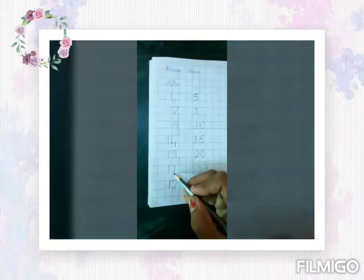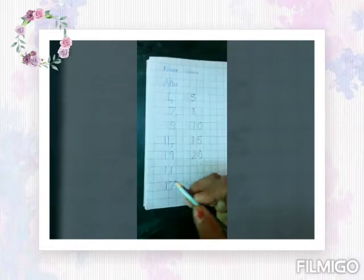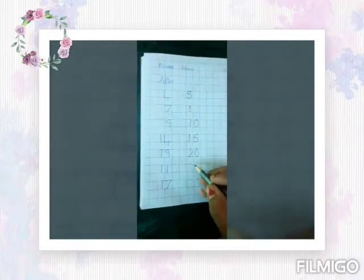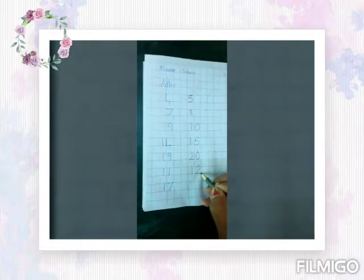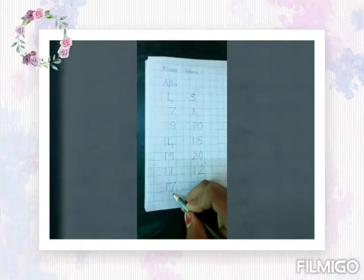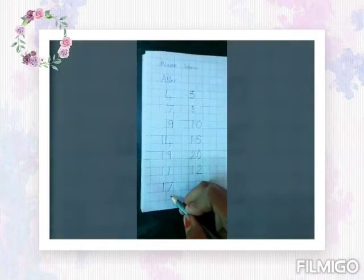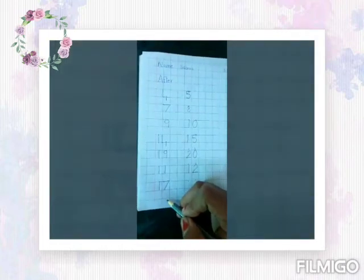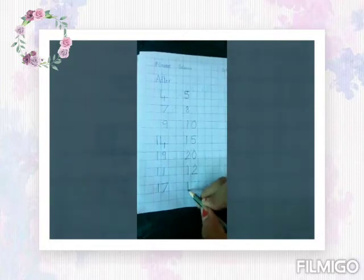Now what number is this children? 11. Now what comes after 11? 12. Now what number is this children? 17. What comes after 17? 18.